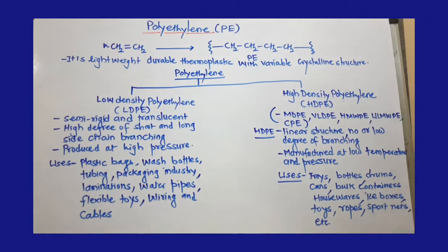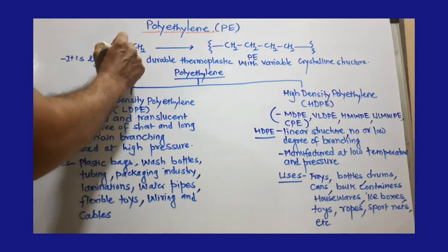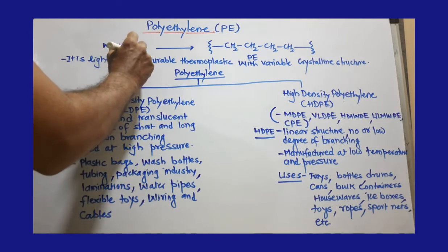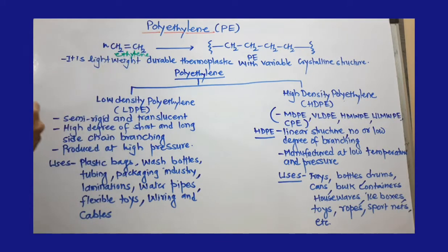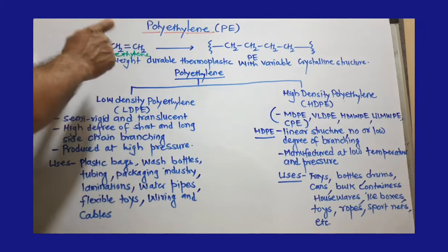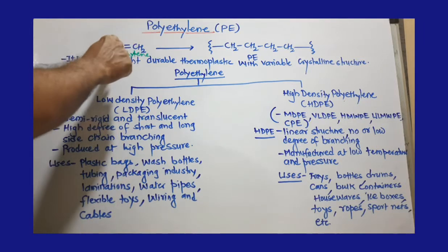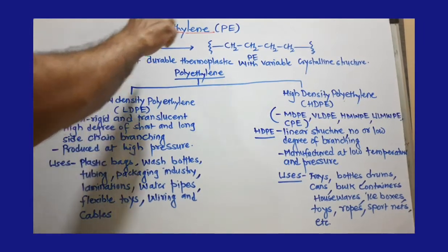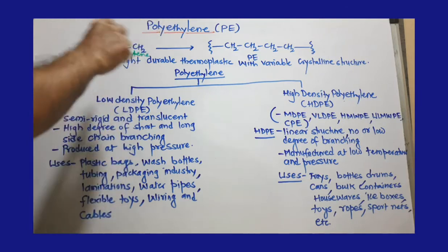Polyethylene, also abbreviated as PE, has ethylene as its monomer. This is the ethylene molecule, and when we take n number of ethylene molecules, because of the pi bond, the ethylene monomers join together.